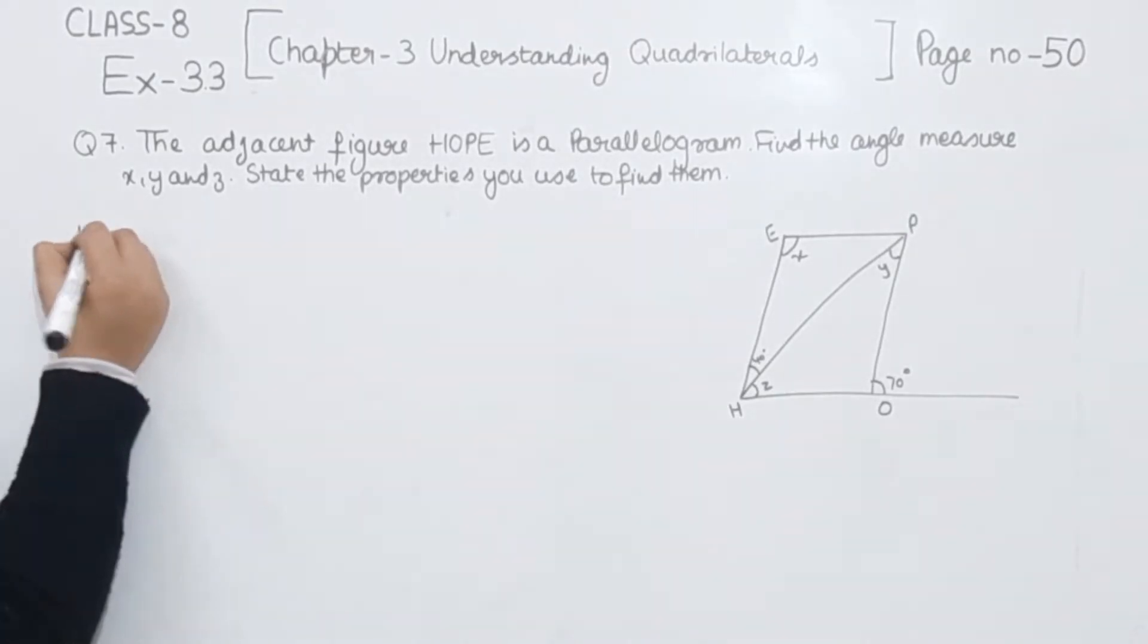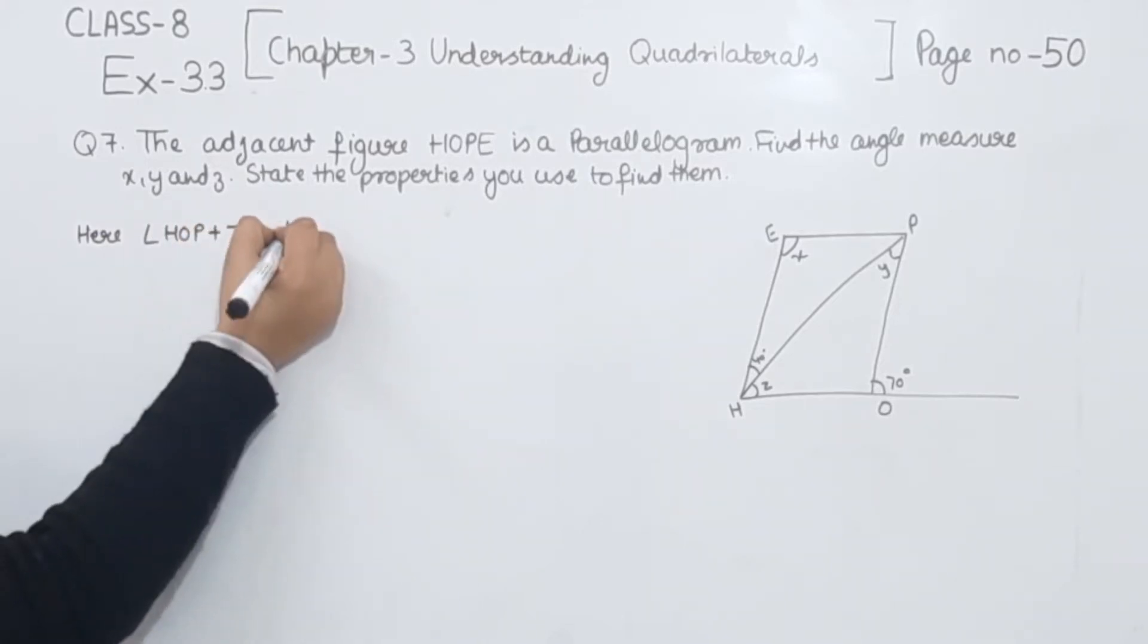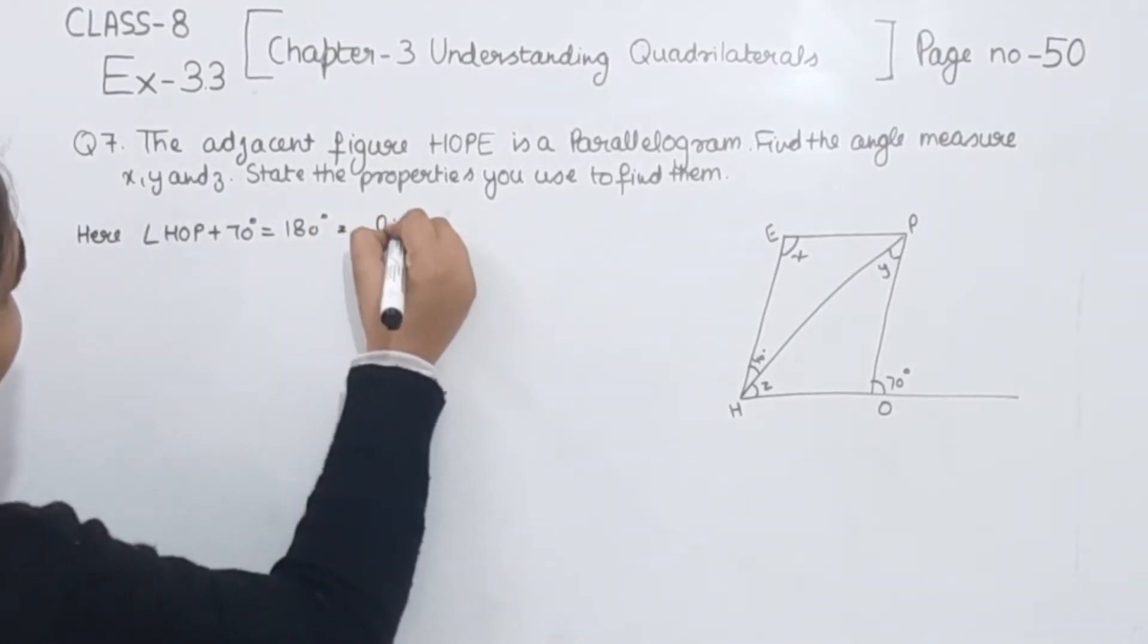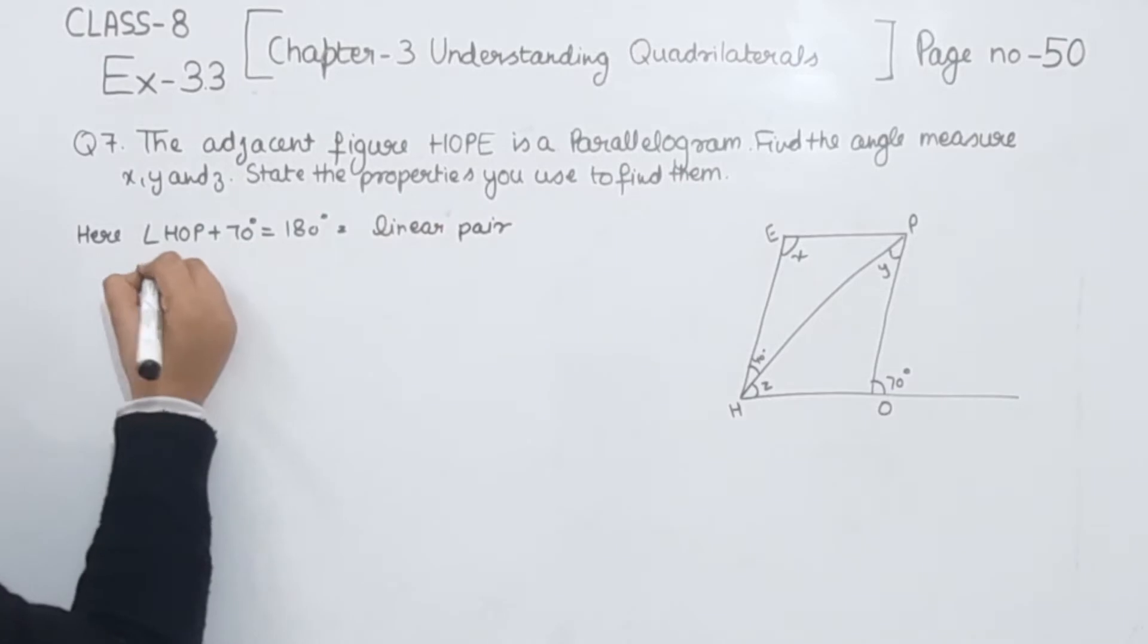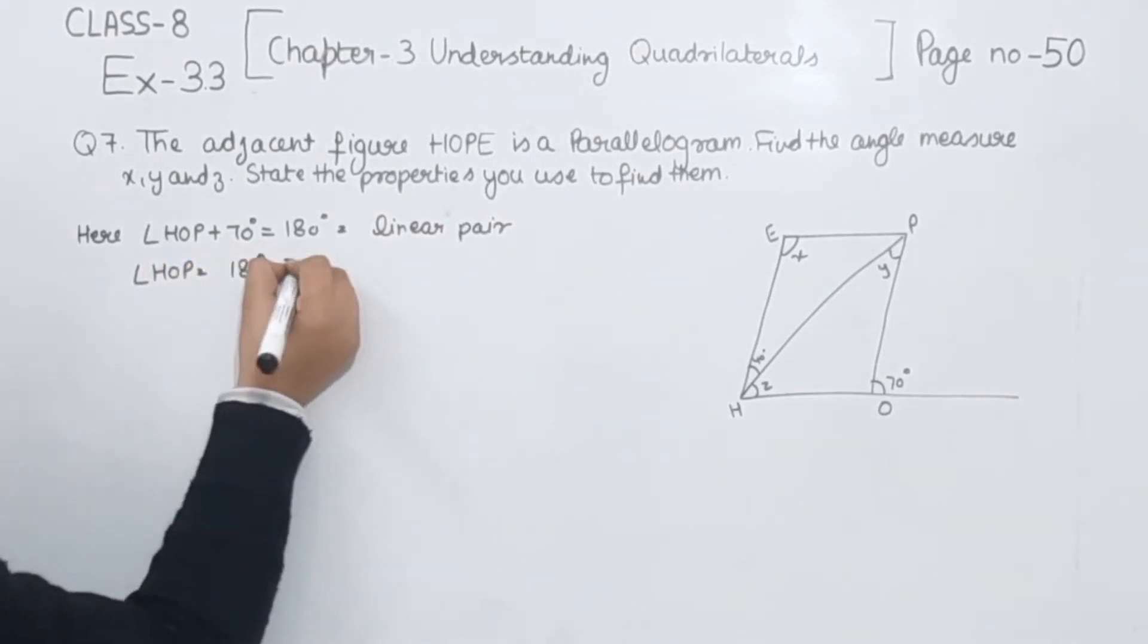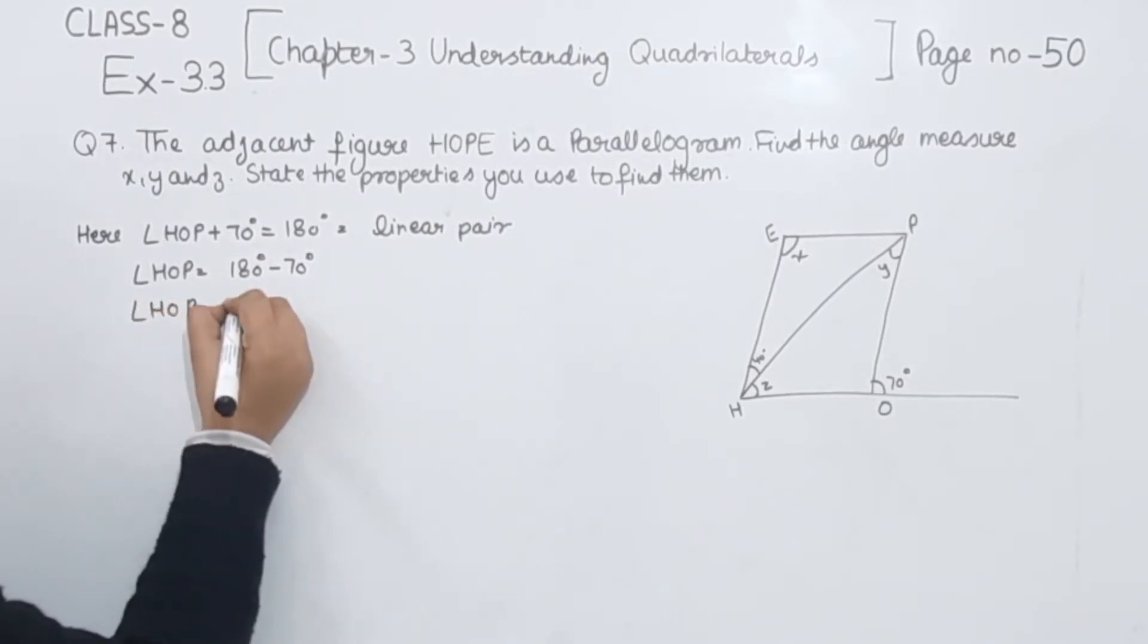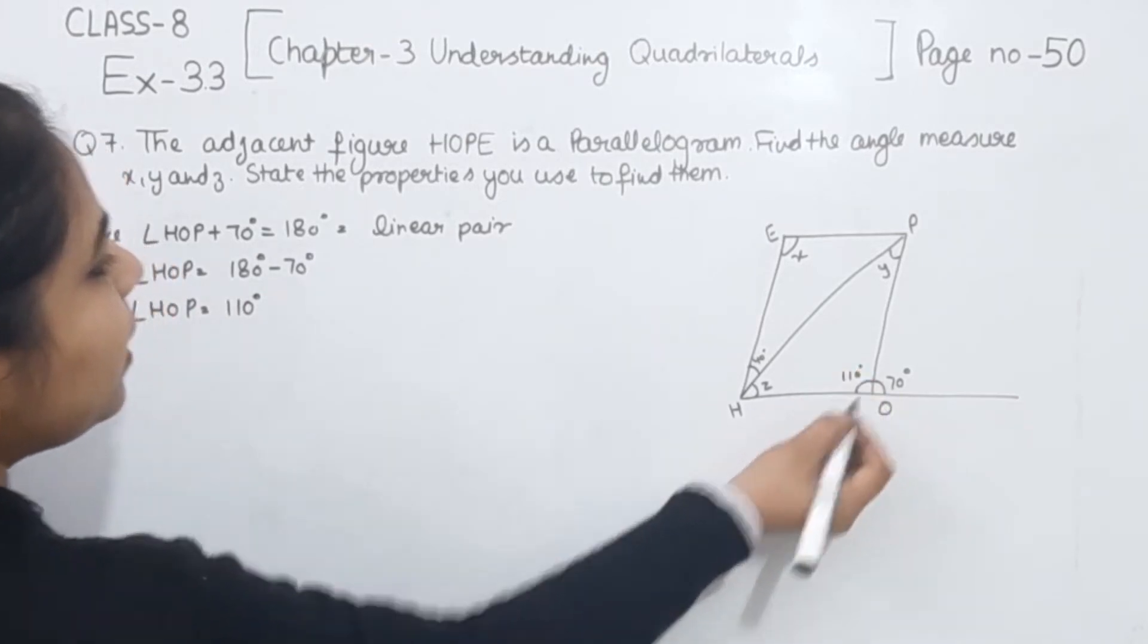First of all, we are going to write here angle HOP plus 70 degrees is equal to 180 degrees. Why? Because this is a linear pair. So I am going to write here angle HOP is equal to 180 degrees minus 70 degrees. The angle HOP we are having as 110 degrees.